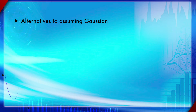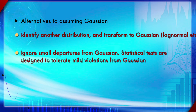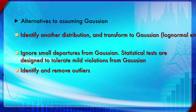There are alternatives to assuming the sample came from a Gaussian population. For example, you can identify another distribution by looking at the histogram and then transform into a Gaussian — for example, using a log transformation from a log distribution. You can also ignore small departures from the Gaussian, since statistical tests are designed to tolerate minor violations. Another option is to identify and remove outliers, which will be discussed in the next section.